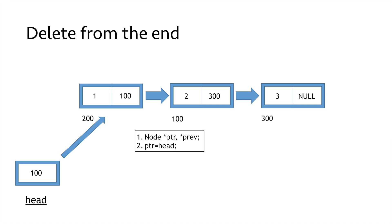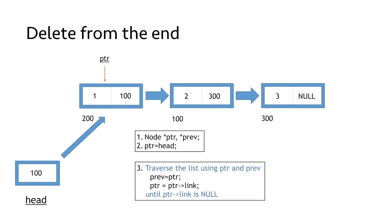We equate ptr to head so ptr is pointing to the first node. Then we start traversing the linked list using pointer ptr and keep track of its previous node using the priv pointer. We equate priv to ptr, then move ptr to the next node, and repeat this process until ptr reaches a node whose linked part is null. We continue: equate priv to ptr, move ptr to the next node. Now the linked part of this node is null, so we stop traversing as we have reached the last node.